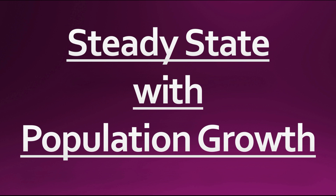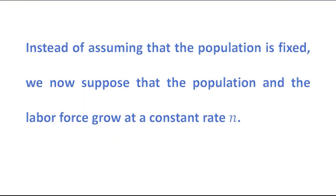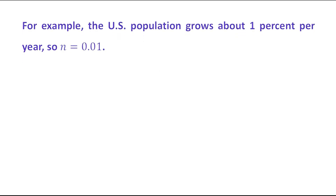Hello students, the next topic is Steady State with Population Growth. Instead of assuming that the population is fixed, we now suppose that the population and the labor force grow at a constant rate N. For example, the US population grows about 1% per year, so the population growth rate N equals 1/100, which is 0.01.